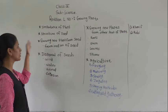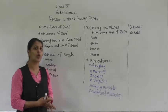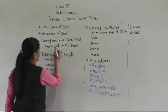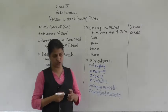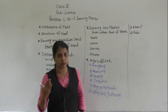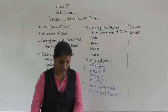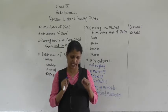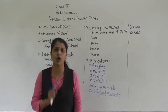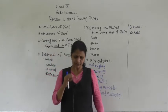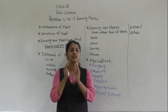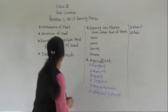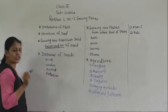We discussed how to grow a new plant from a seed. That process is called germination. Germination is the growth of a baby plant — or embryo — from a seed into a seedling. That process is called germination.